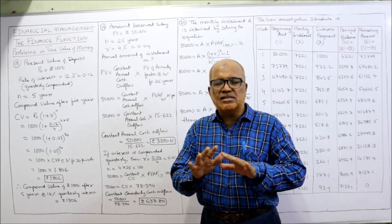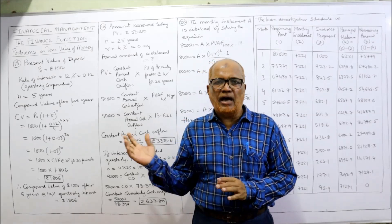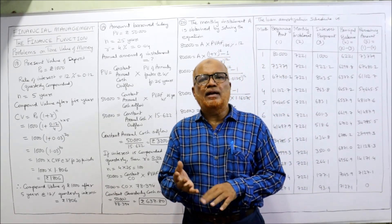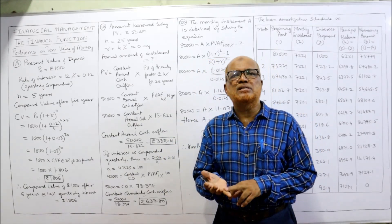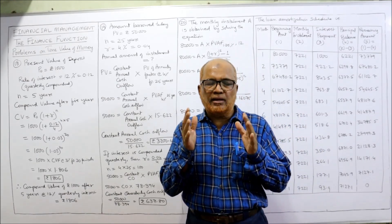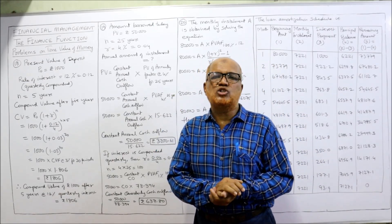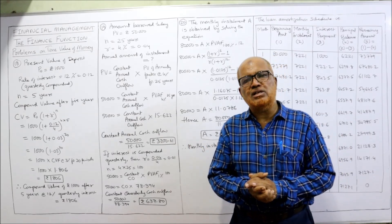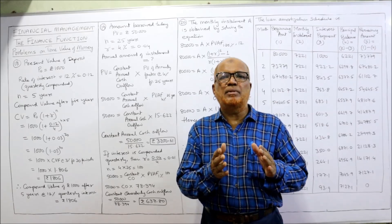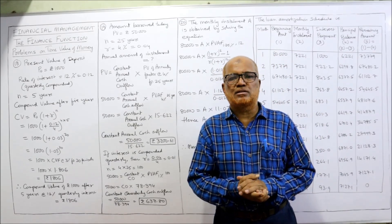This is the end of the 20 problems selected for time value of money, and it marks the end of Unit 1 — the Finance Function. I have uploaded all problem videos on capital budgeting, cost of capital, capital structure, leverage, cash management, inventory management, receivable management, working capital management, dividend policies, and corporate restructuring. These videos are very useful for BBA, MBA, MCOM, CA, CMA, and CS students. You can find them in my playlist under Financial Management.